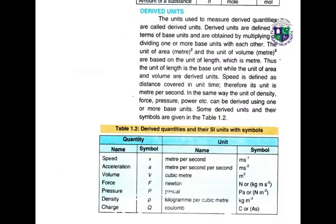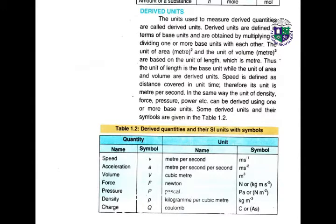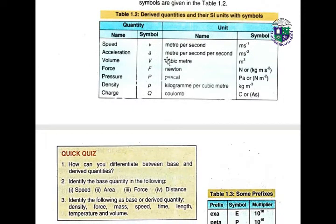The units used to measure derived quantities are called derived units. Derived units are defined in terms of base units and are obtained by multiplying or dividing one or more base units. For example, the unit of area is meter squared and the unit of volume is meter cubed, both based on the unit of length, which is meter. Speed is defined as distance covered in unit time, so its unit is meter per second. The derived units table includes: speed — meter per second; acceleration — meter per second squared; volume — cubic meter; force — Newton; pressure — Pascal.